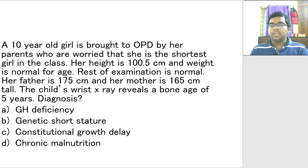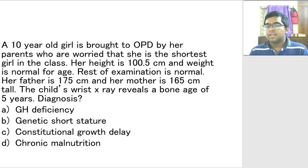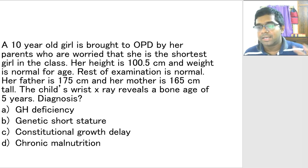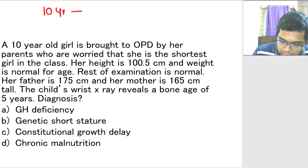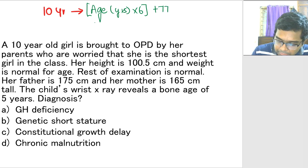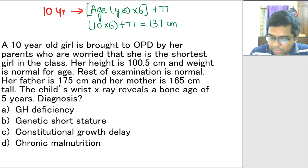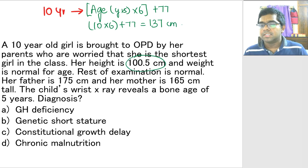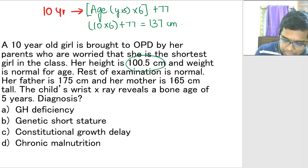A 10-year-old girl is brought to OPD by her parents who are worried that she is the shortest girl in the class. Her height is 100.5 cm and weight is normal. Rest of her examination is also normal. Father is 175 cm, mother is 165 cm. The child's wrist X-ray reveals a bone age of 5 years. For a 10-year-old, the expected height using the formula — age in years multiplied by 6 plus 77 — gives 137 cm. But this child is only 100.5 cm, so this child is definitely short. Both parents have almost normal height, so this is not a familial issue.